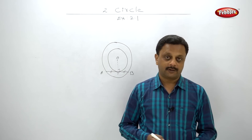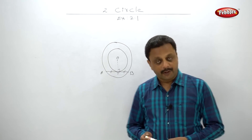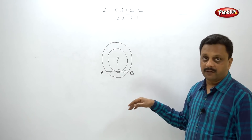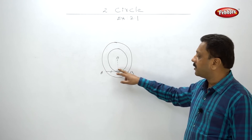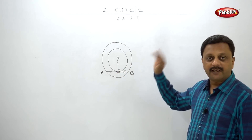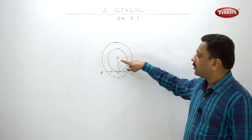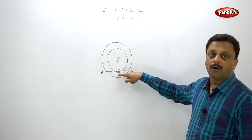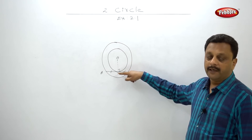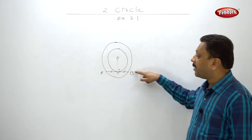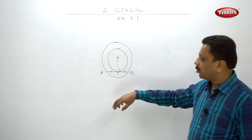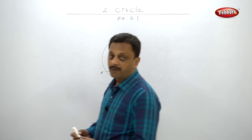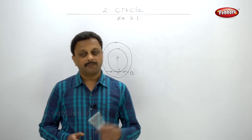So simple — two marks. We first proved that OT is perpendicular to AB using the inner circle tangent property. Then in the outer circle, OT is perpendicular to chord AB, and a perpendicular from the center bisects the chord. Hence AT equals TB, and T is the midpoint of AB.